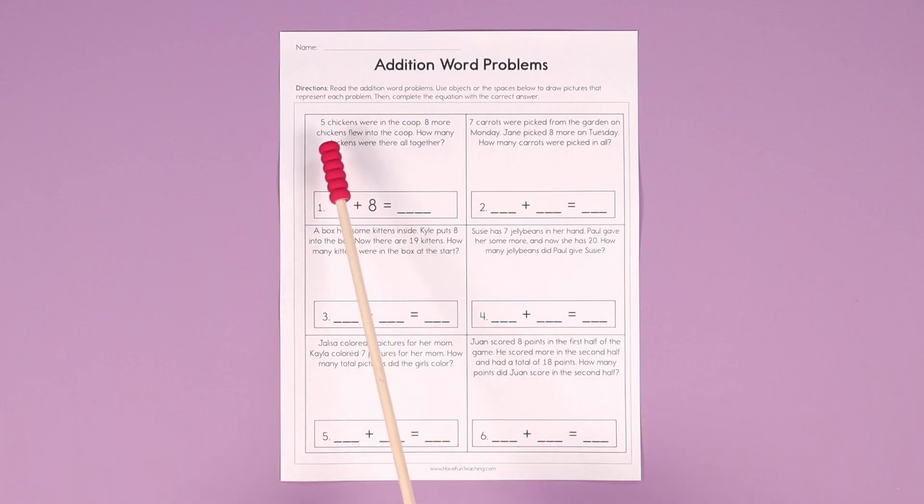in this first one, five chickens were in the coop. Eight more chickens flew into the coop. How many chickens were there all together?